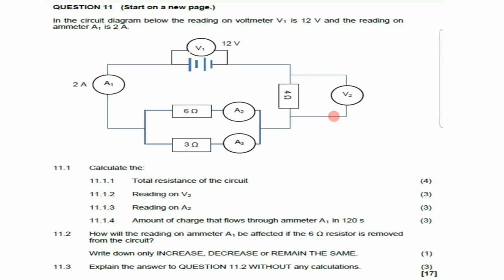Question 11.1.2 says calculate the reading on V2. V2 is connected in parallel to the 4 ohm resistor, meaning it reads the potential difference across the 4 ohm resistor. Since the 4 ohm resistor is connected in series, the current remains the same throughout. So the 4 ohm resistor also carries a current of 2 amperes, just like A1.